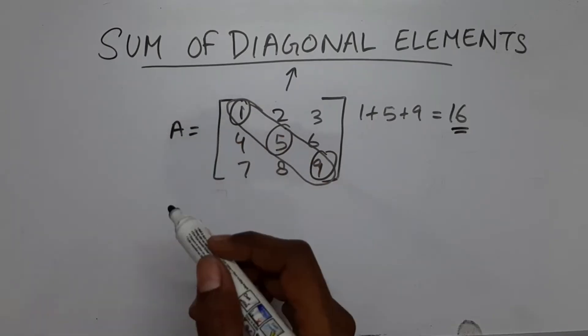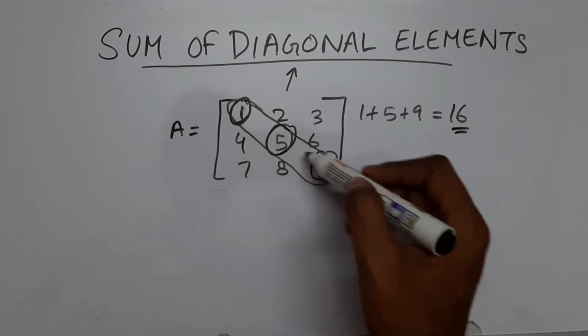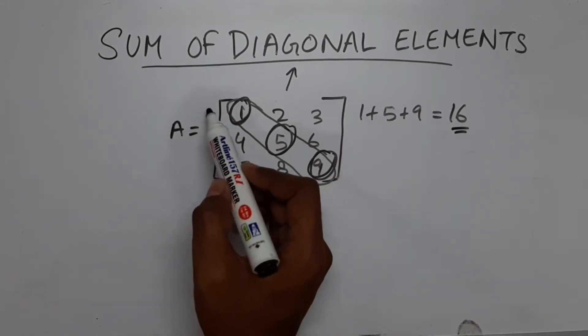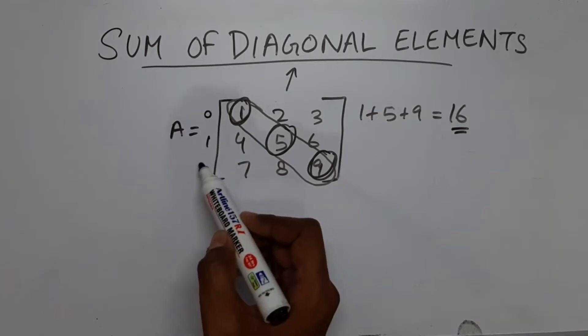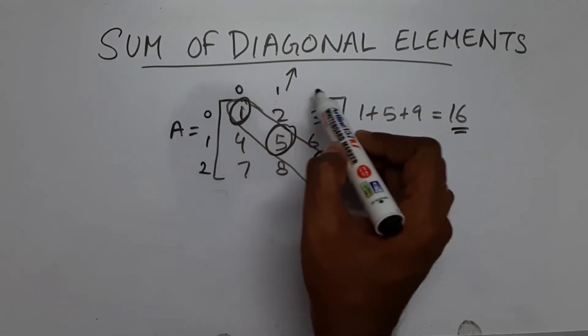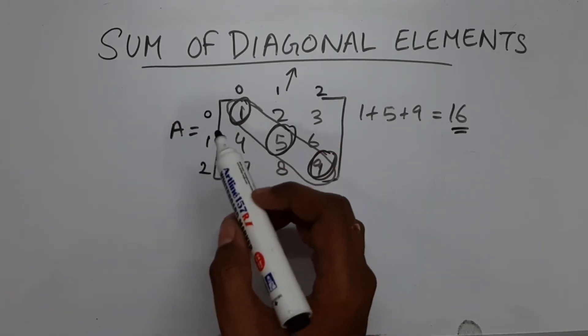Let's say this is an array A. So how shall we find the sum of the diagonal elements? So first let's write the row and column index for each of these. So this is row, this is column 0, 1 and 2. These are the rows and columns.